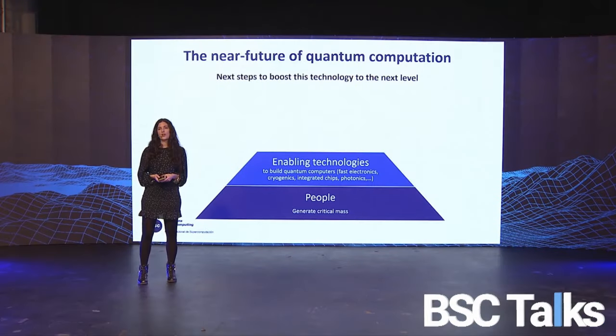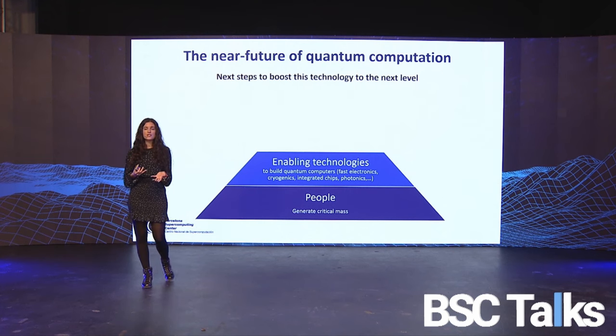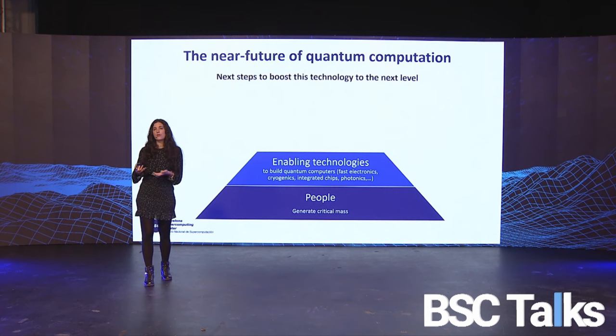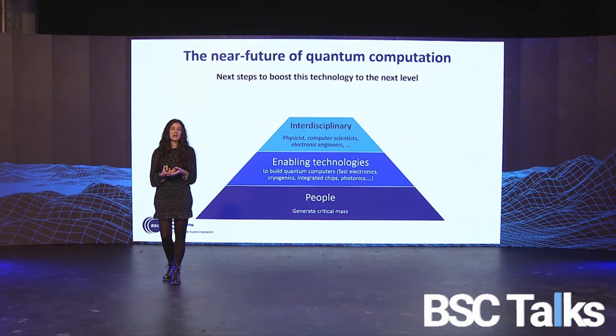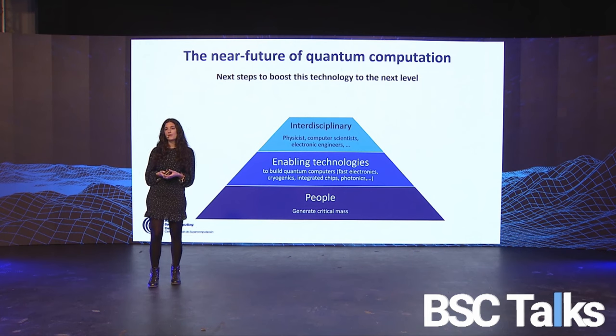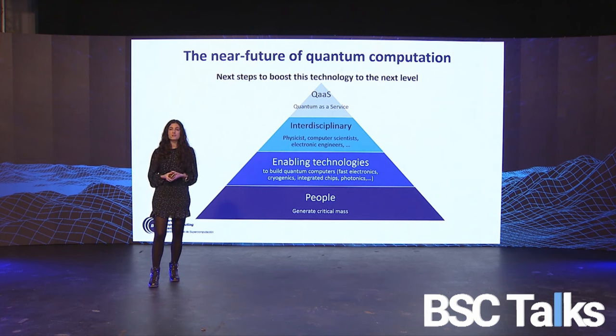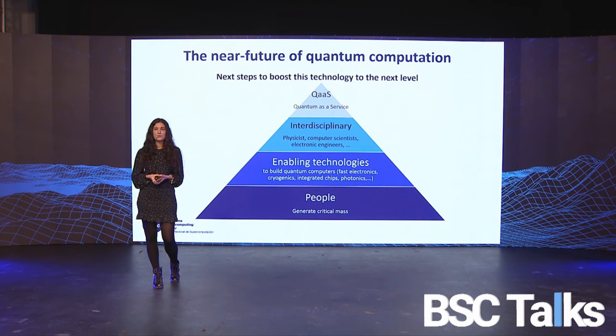Next are the enabling technologies. To build a quantum computer, we need other kinds of technologies — not only specific to quantum computation — including cryogenics, fast electronics, integrated chips, photonics, and many others required to boost the quantum computing ecosystem. We need more people from different fields, not only physicists. We also need computer scientists and engineers from diverse backgrounds to study and identify applications. Finally, we need quantum as a service — offering these devices to the community to explore all the advantages and limits of this computation.